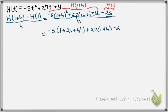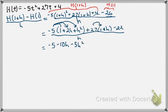All over h. Next thing we're going to do is distribute that negative 5, so negative 5 times 1 is negative 5, negative 5 times 2h is minus 10h, negative 5 times h squared is minus 5h squared. 27 times 1 is plus 27, 27 times h is plus 27h.